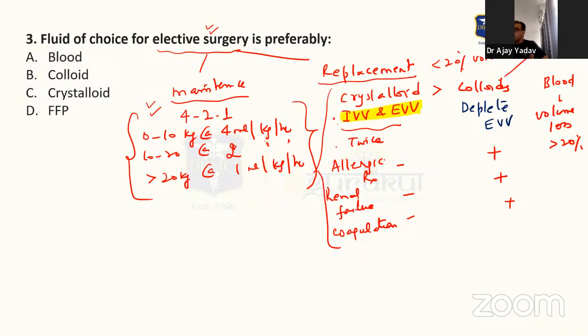So you can say colloids are only reserved for severe shock. Means say BP is very low, 20, 30. That time you will not think of maintaining extravascular volume. That time you have to maintain intravascular volume at any cost. Because at least oxygen reaches brain and heart. So otherwise crystalloids.